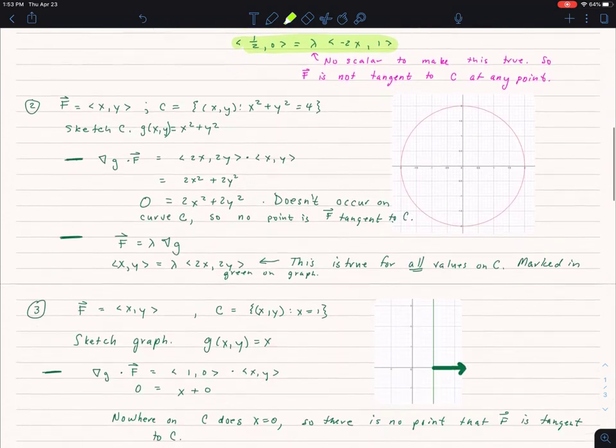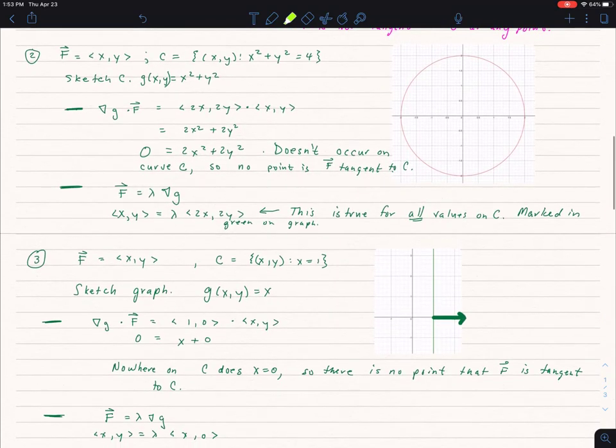Let's do a different example. This example has F being x comma y, and C is a circle. I'm going to let G equal x squared plus y squared. And when I take del G and dot it with F to see if there's any point where that is in fact equal to zero, I find that I get zero equals 2x squared plus 2y squared. And there's no point on that curve C that makes that equation true. So at no point is F tangent to C.